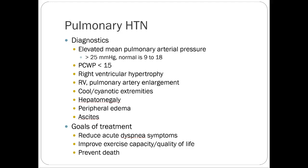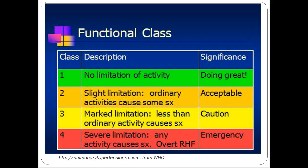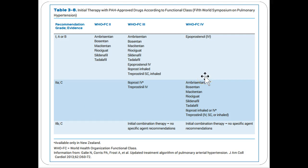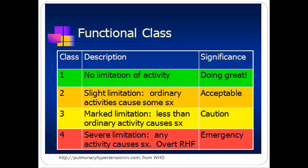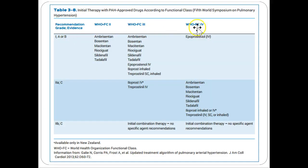Treatment is guided by WHO functional classes — similar to how heart failure is classified. The higher the class, the more severe the symptoms. Initial therapy with pulmonary hypertension-approved drugs is guided by functional class according to the fifth symposium guidelines from 2013.